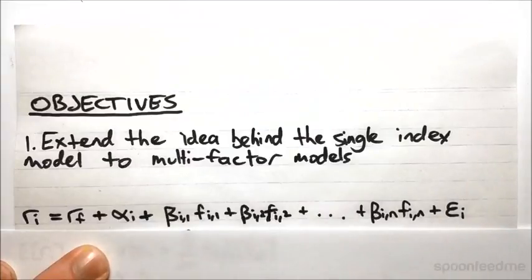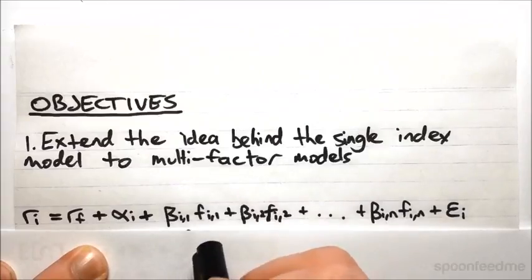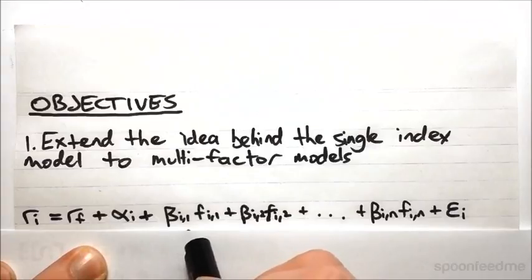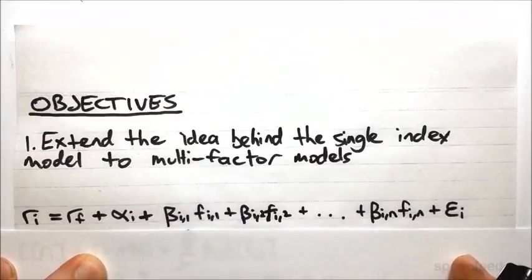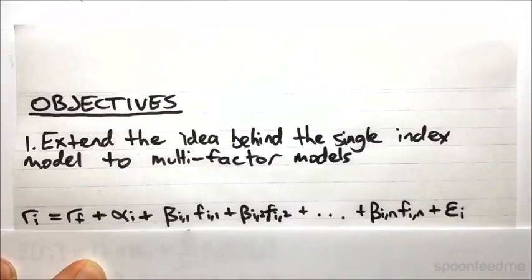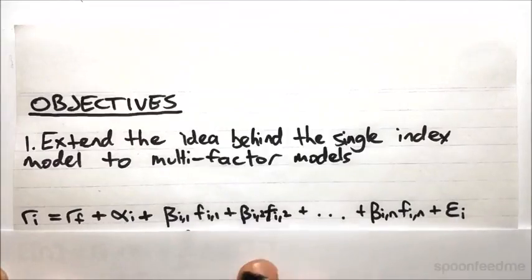These factors could be all sorts of macroeconomic factors such as the unemployment rate, the inflation rate, and so on. You could even make one of your factors be that same market index used in the single index model and just introduce some new ones to go along with it. Because ultimately there are going to be things that affect just about all assets on the market, but they might be affecting different assets in different degrees, so this really accounts for that.